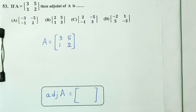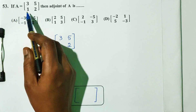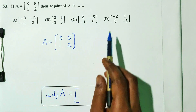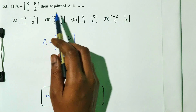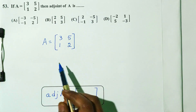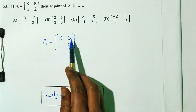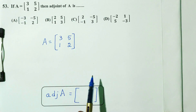Question number 53. If A is equal to the matrix: 3, 5, 1, 2, then find the adjoint of A. There are 4 options. So the matrix A is equal to: 3, 5, 1, 2.